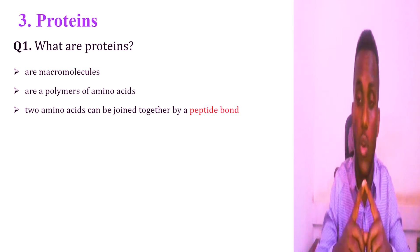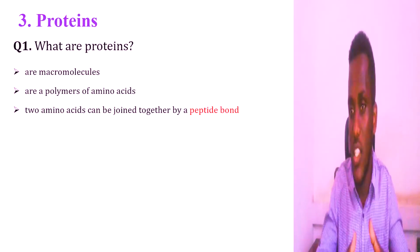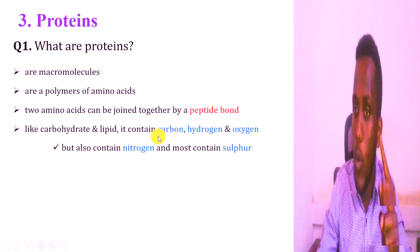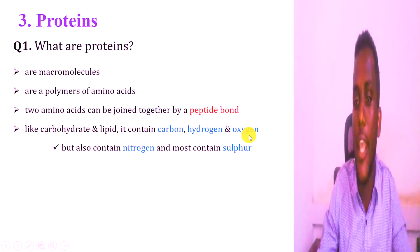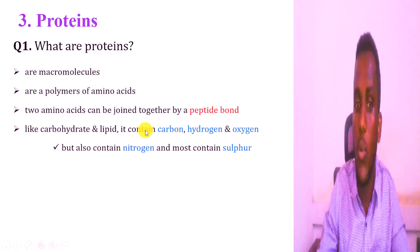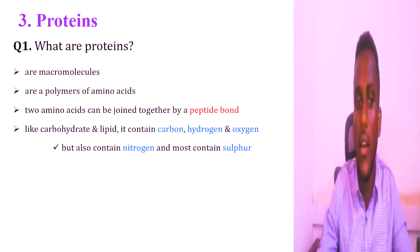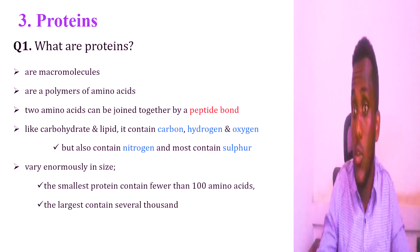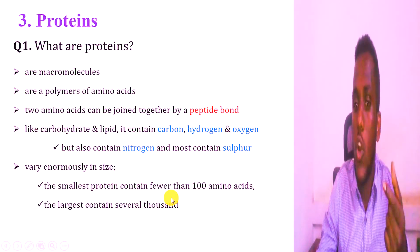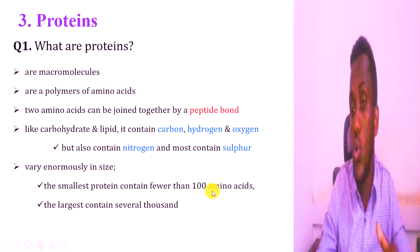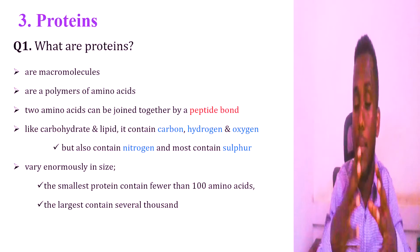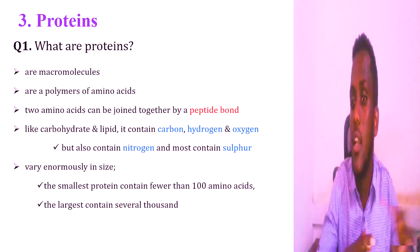The smallest unit of protein is the amino acid. Another property, like that of carbohydrates and lipids, is that the protein consists of the elements carbon, hydrogen, and oxygen. In addition to this, nitrogen and sulfur are also present. The size of the protein varies.